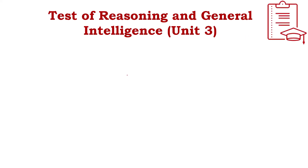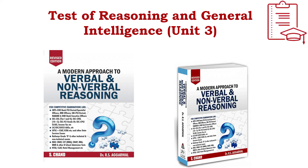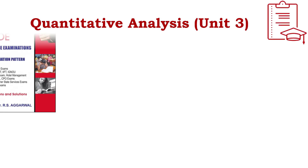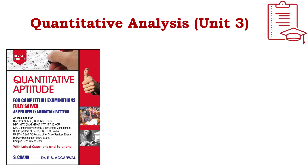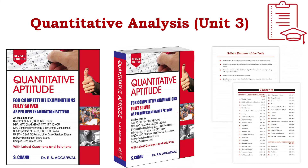For Unit 3 (Test of Reasoning and General Intelligence), you can refer to S. Chand's material authored by Dr. R.S. Agarwal. This book is exclusively for reasoning and general intelligence and is available at major bookstalls and online. For quantitative analysis, you can use S. Chand's Quantitative Aptitude, also written by Dr. R.S. Agarwal, which covers all aspects of quantitative aptitude.